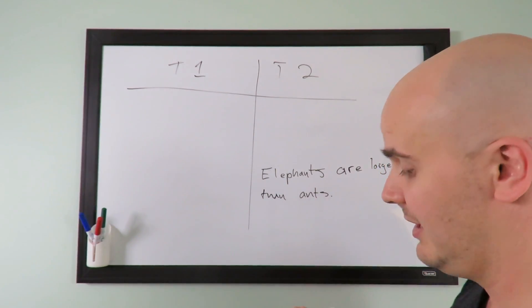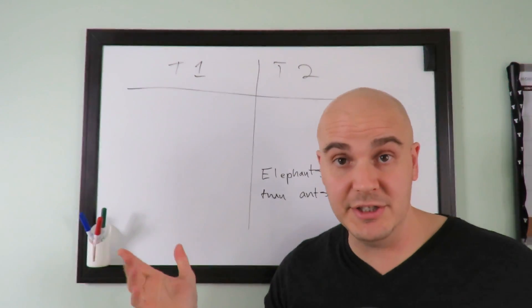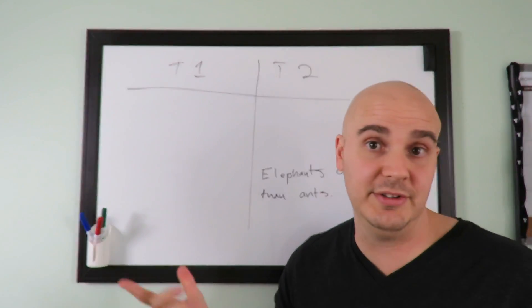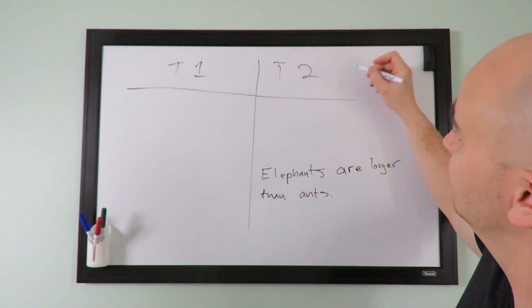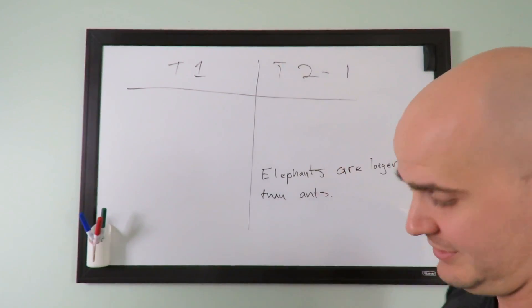And when they're done, they say 'we're finished.' Whichever team finishes first gets their point. So in this example, team two finishes first—one point.